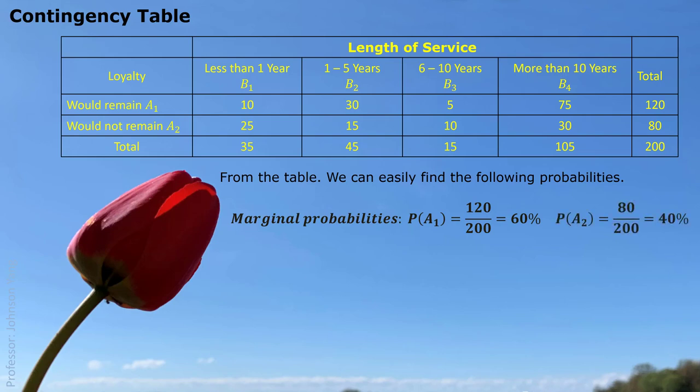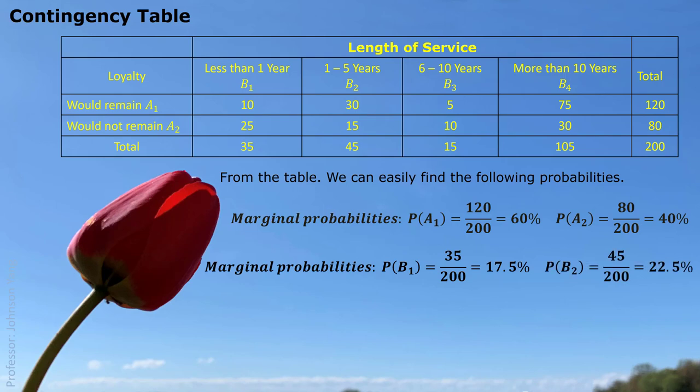Similarly, 40% would be the chance for a person to leave — the person answered no. We can also find the probability of B1: how much percent of people worked for the company less than one year. Randomly picking a person from this survey, how much chance that person worked less than one year? The answer is 17.5%. Similarly, we can get probability B2, B3, and B4. They are all marginal probabilities, coming from each column total divided by the table total.